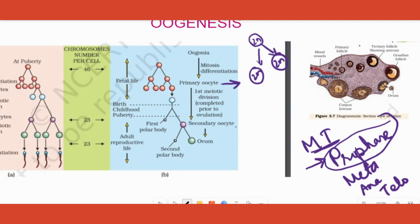One primary oocyte will start changing itself. It starts developing certain cells around it called granulosa cells, and at that stage of the primary oocyte we call it a primary follicle. It further develops coverings around it called theca, and then we call it a secondary follicle. It also develops a cavity, and then we call it a tertiary follicle — the cavity's name is antrum.